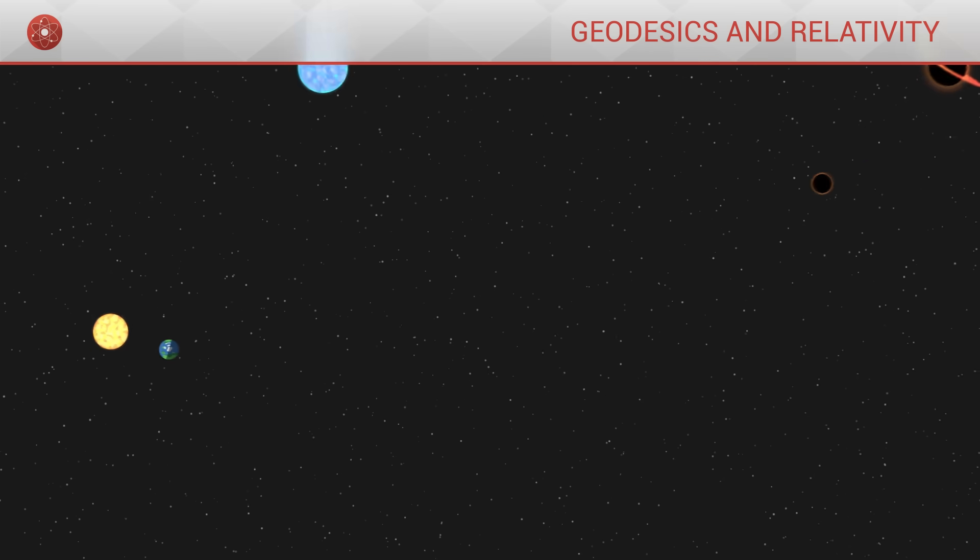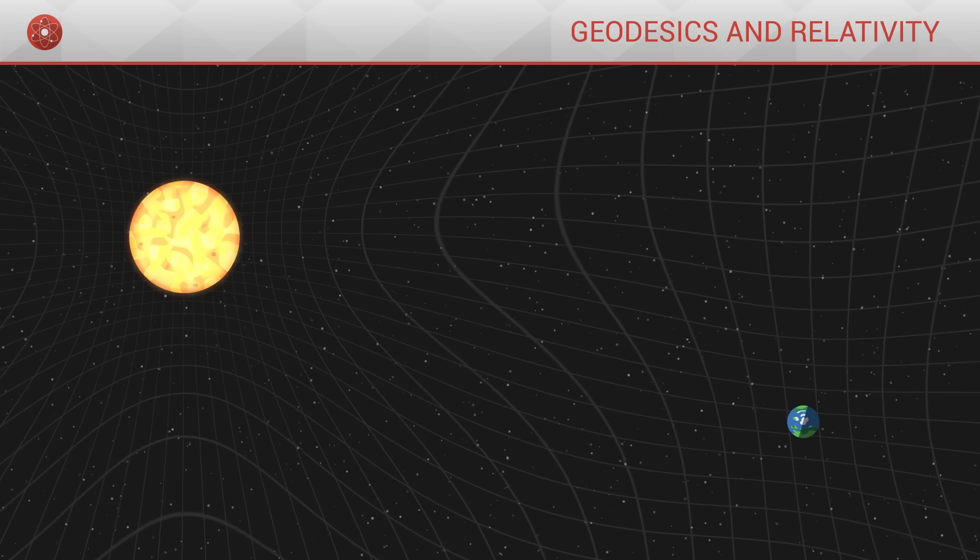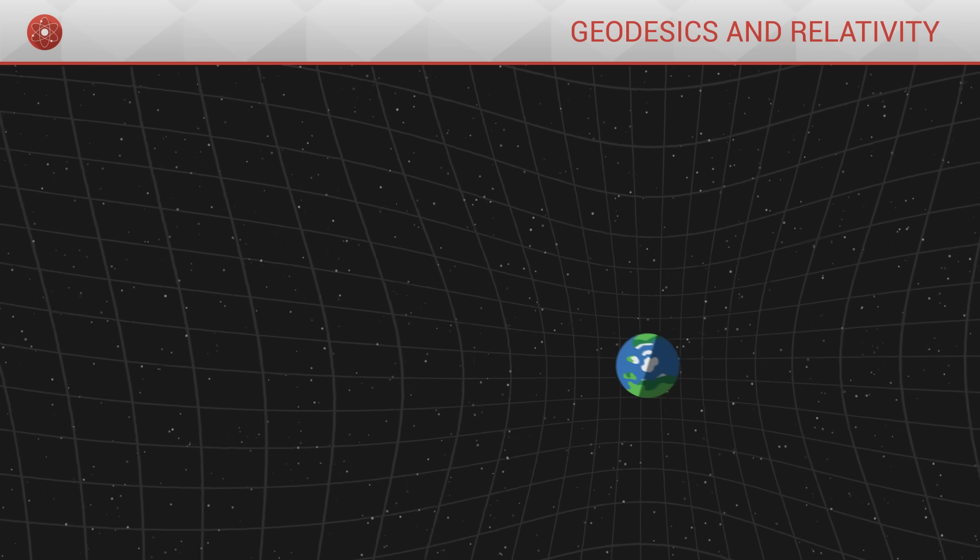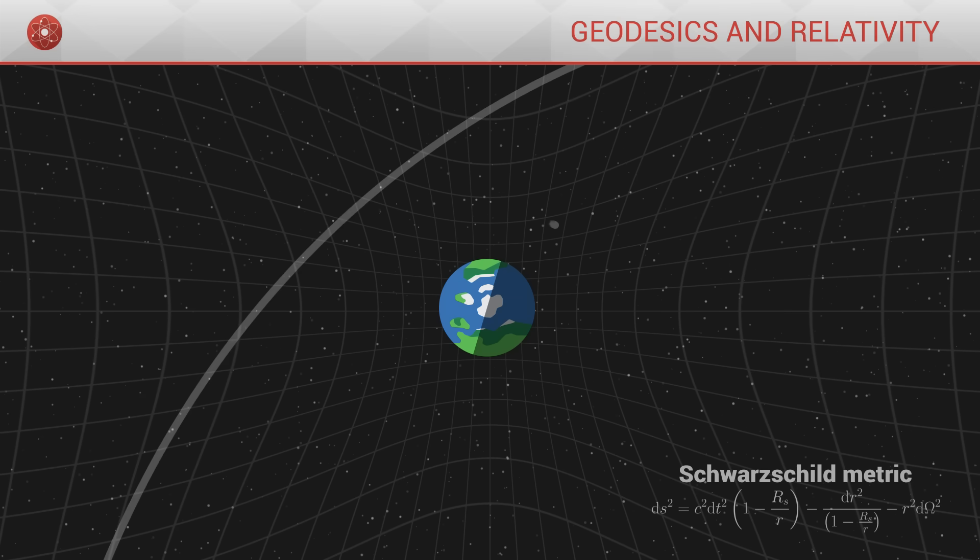However, close to a massive body, space-time gets bent. For bodies that are spherical, isolated and stable over time, we consider the Schwarzschild metric. It is the most common metric in general relativity. The geodesics correspond to deflected trajectories or orbits.